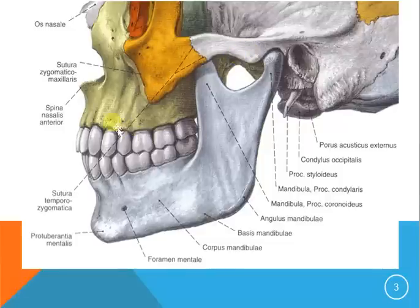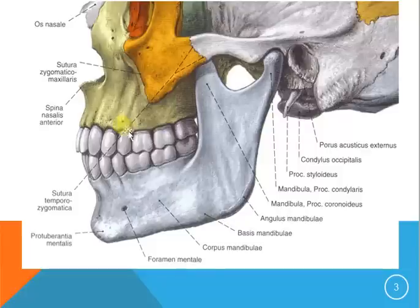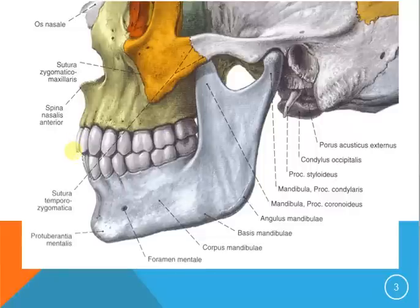The maxilla, as I said before, houses the upper teeth. In the upper teeth we have six molars, four premolars, two canines, two lateral incisors, and two central incisors.